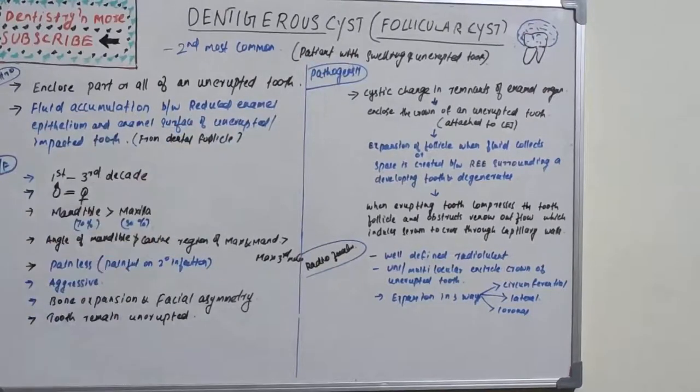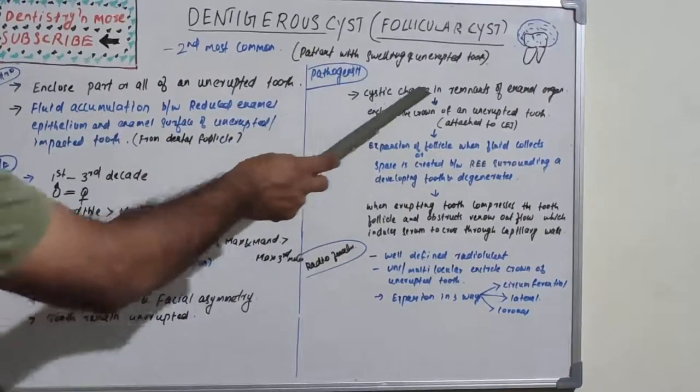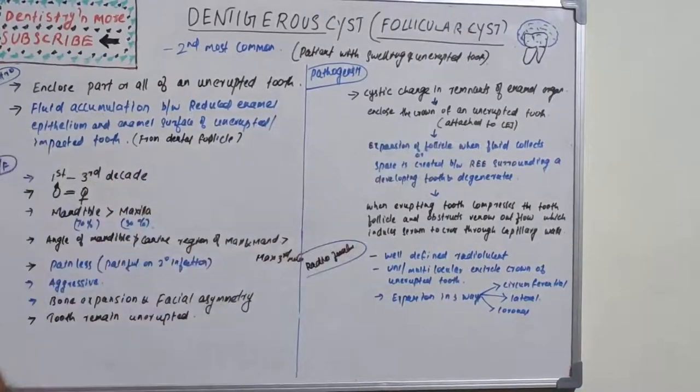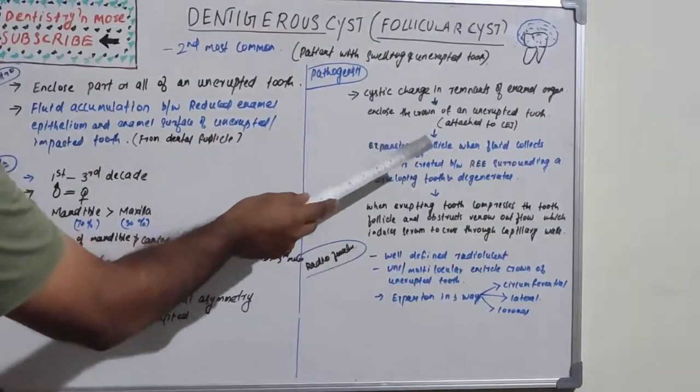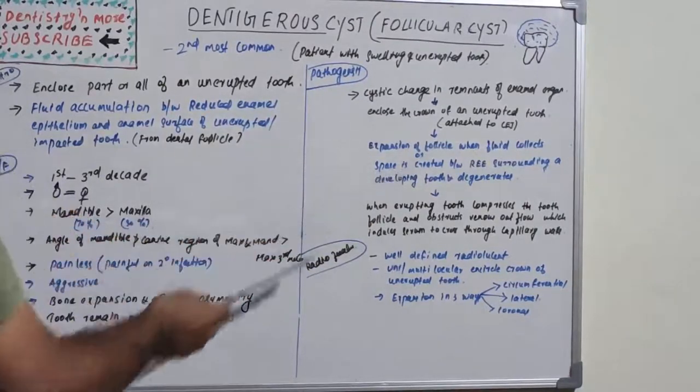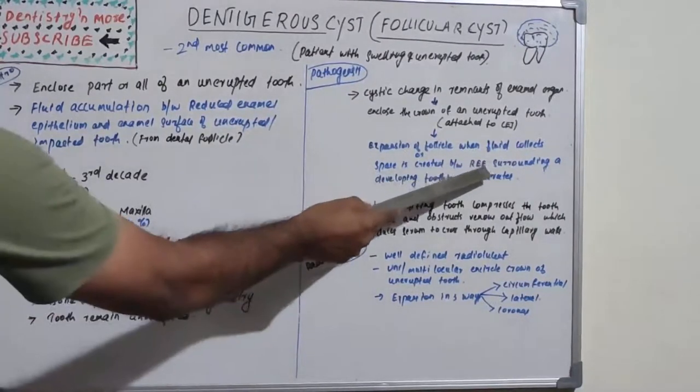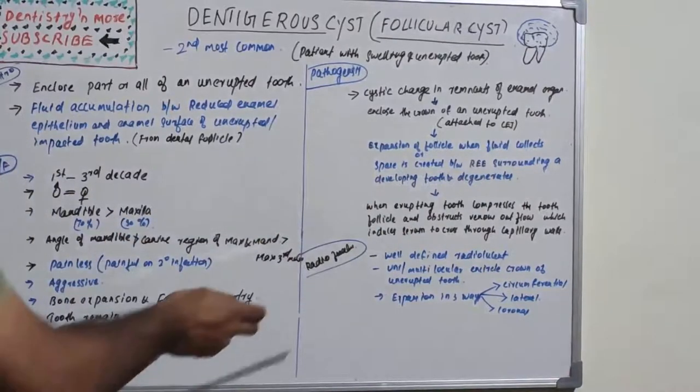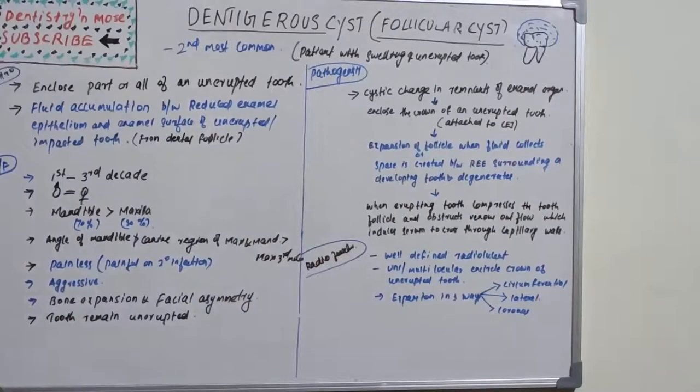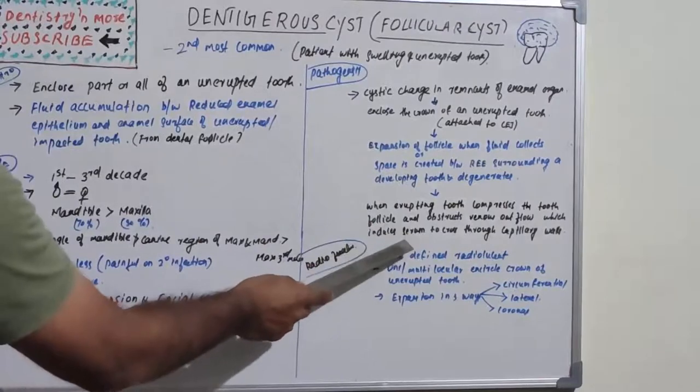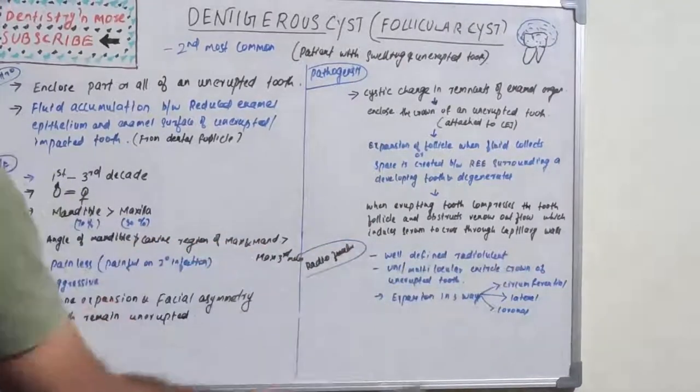For pathogenesis, first there will be cystic changes in the remnants of enamel organ which encloses the crown of an unerupted tooth attached to the cemento-enamel junction. There is expansion of follicle when fluid collects or space is created between the reduced enamel epithelium surrounding a developing tooth, which degenerates.